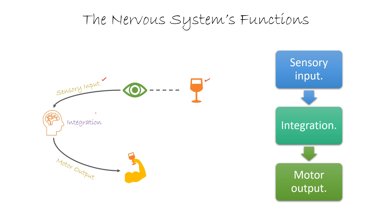So there are three major functions: sensory input, integration, and motor output. The neural system uses its millions of sensitive receptors to monitor changes occurring both inside and outside the body — each change is called a stimulus. Second, it processes and interprets the sensory input and makes a decision — that is integration. Third, it dictates a response by activating the effector organs, the muscles or glands — that is the motor output.